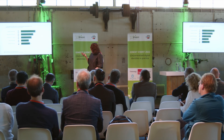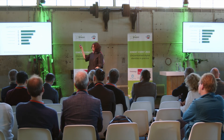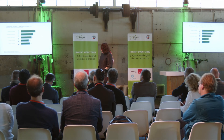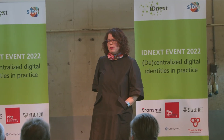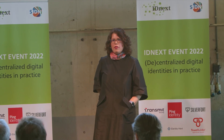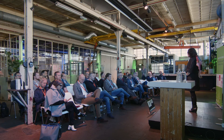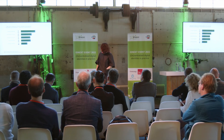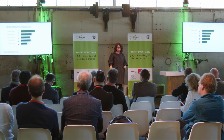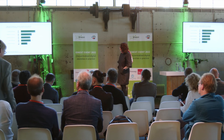If you ask them about awareness of information tracking and processing, your controllers say 81% of them know their employer does this. The confused folks and interestingly the cynics aren't really aware about their company processing this information, which suggests that a lot of their distrust basically comes from a lack of knowledge of what organizations do with data. If you ask them about taking active measures to limit collection of personal information, a majority of controller employees are doing so — 64% of them. Unsurprisingly, it's the confused employees who do this the least at 28% because they don't know how.